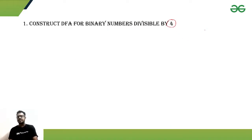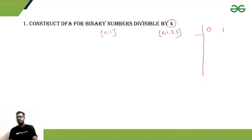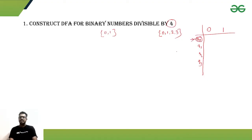For binary numbers, the symbols are zero and one. Divisible by four means there will be four kinds of remainders. So our state table will have inputs zero and one, with states q0, q1, q2, and q3. Since the binary number should be completely divisible by four, q0 will be both our initial state and our final state.